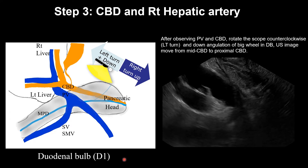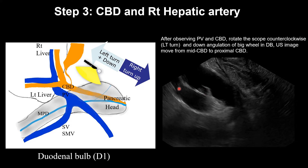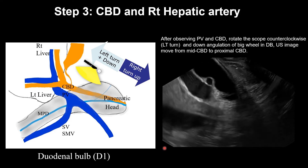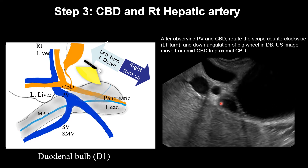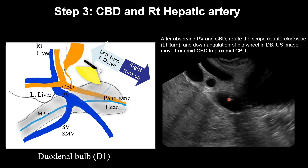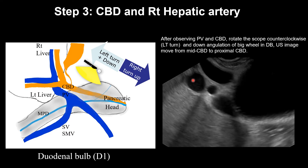Step 3: CBD, right hepatic artery, and gallbladder in this area. Left turn and downward of the scope — we can see the mid-CBD and portal veins. On ultrasound imaging, this is the distal CBD, right hepatic artery, and this is the portal vein. We can see the CBD and cystic duct. Following the cystic duct, we can see the gallbladder neck area and body area. This is the portal vein.